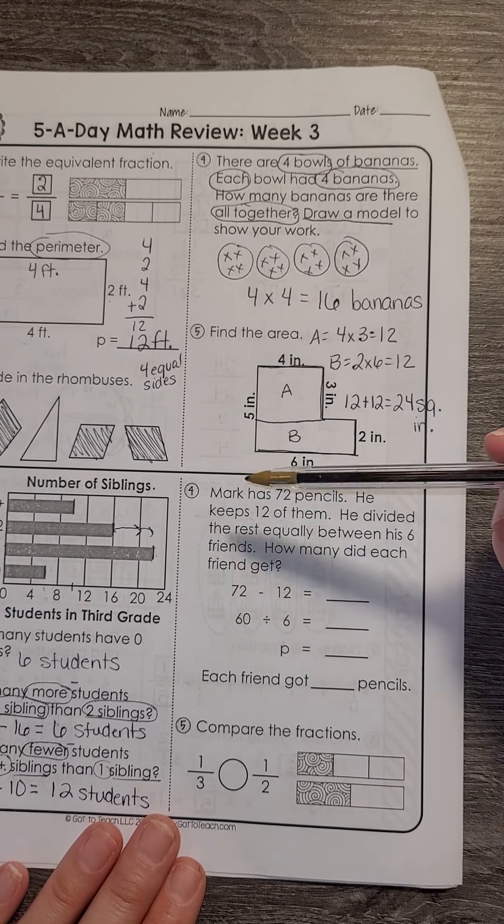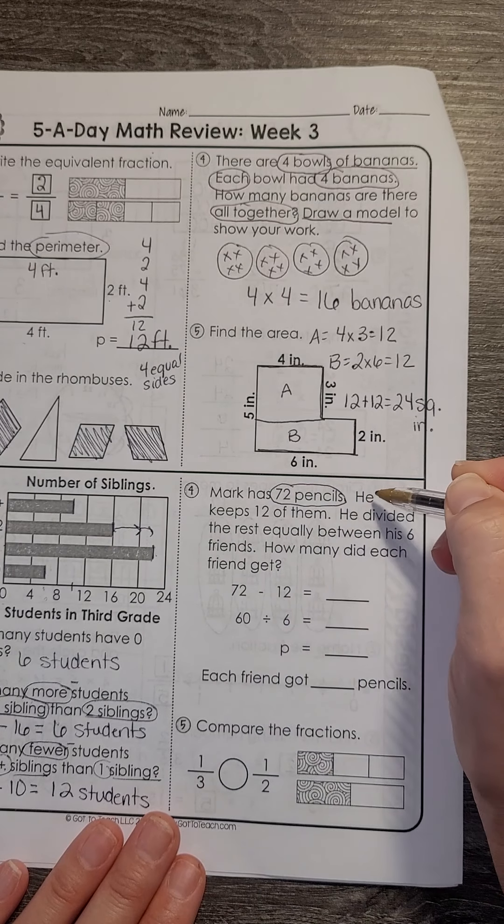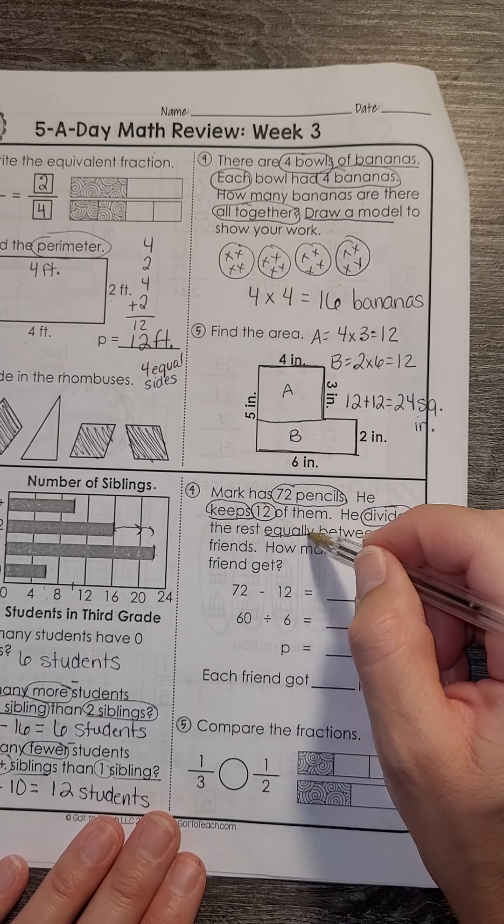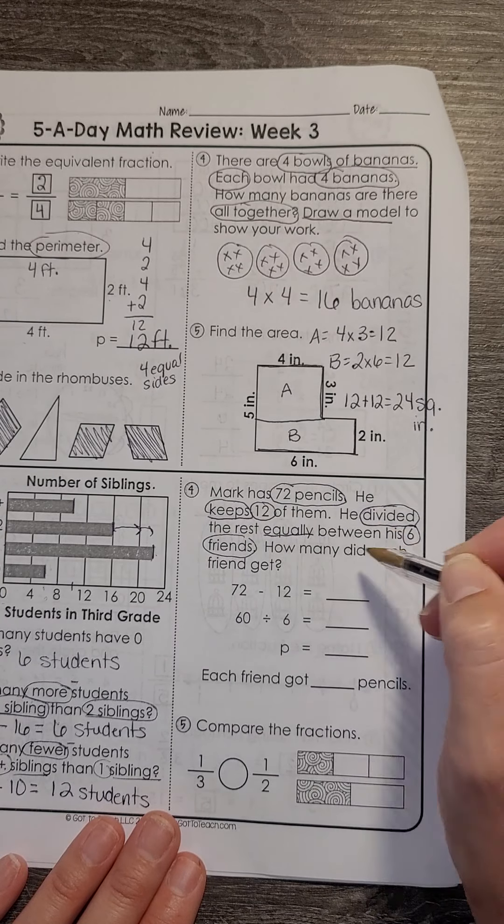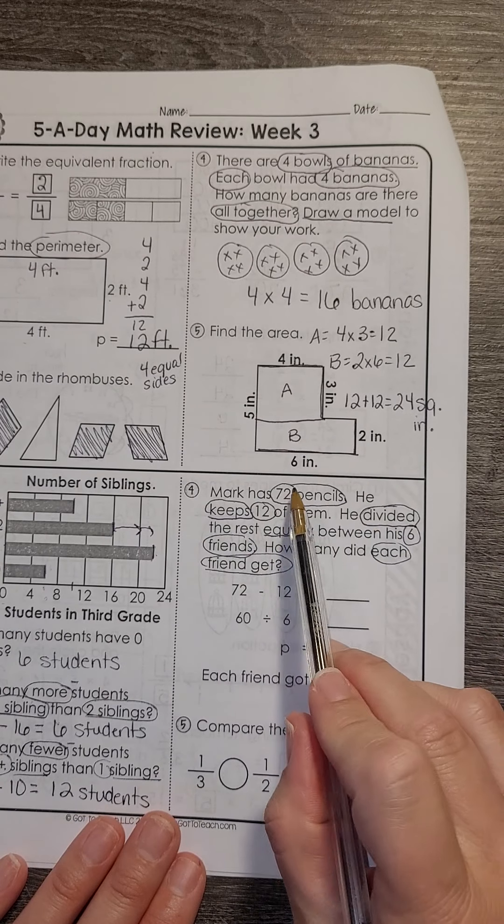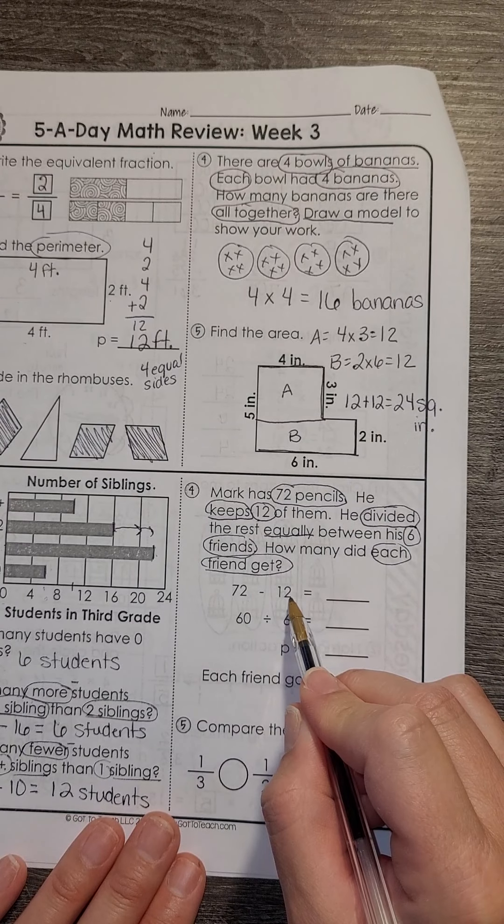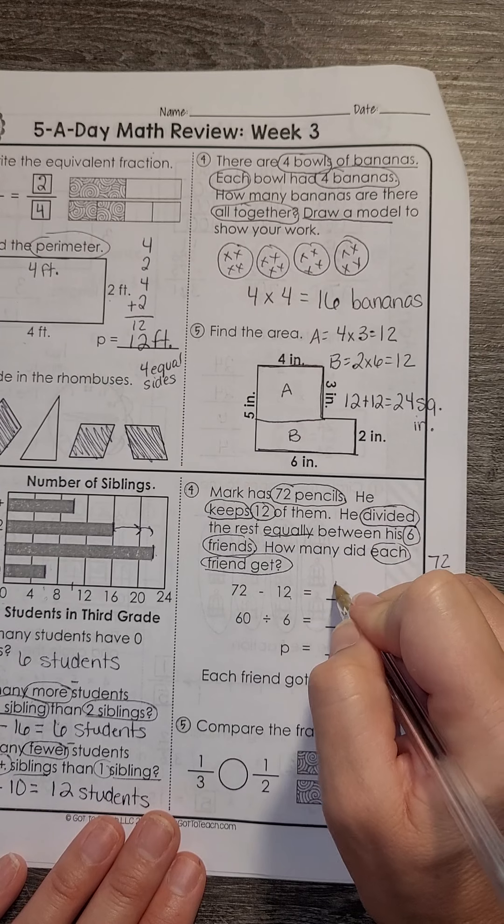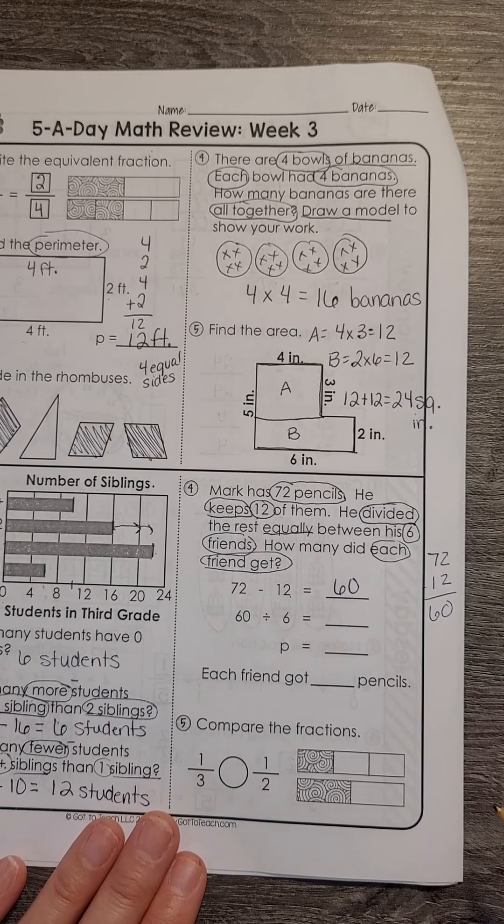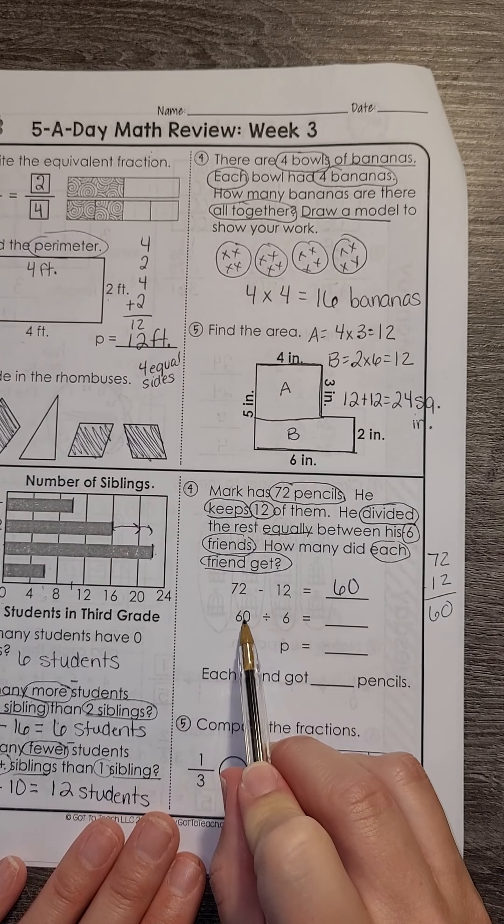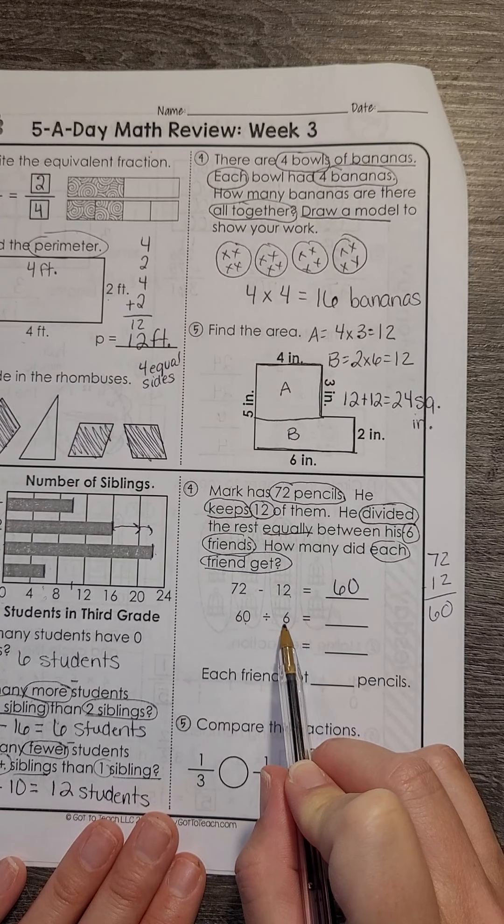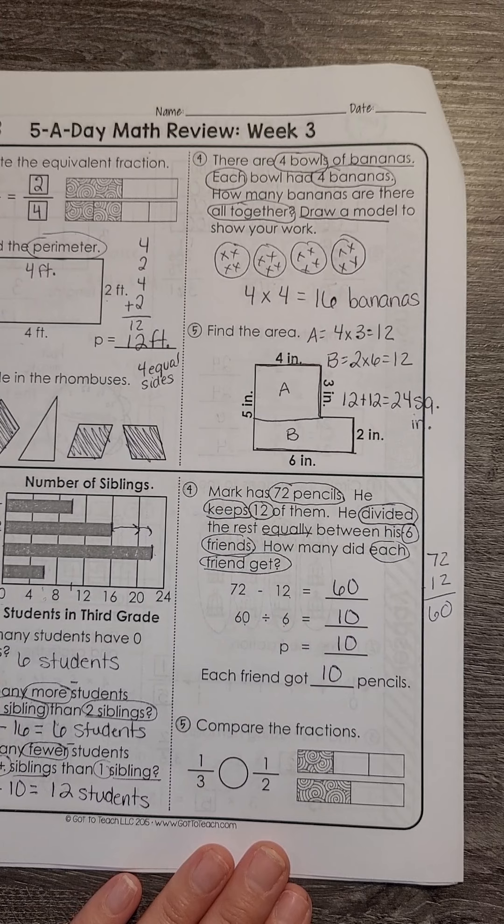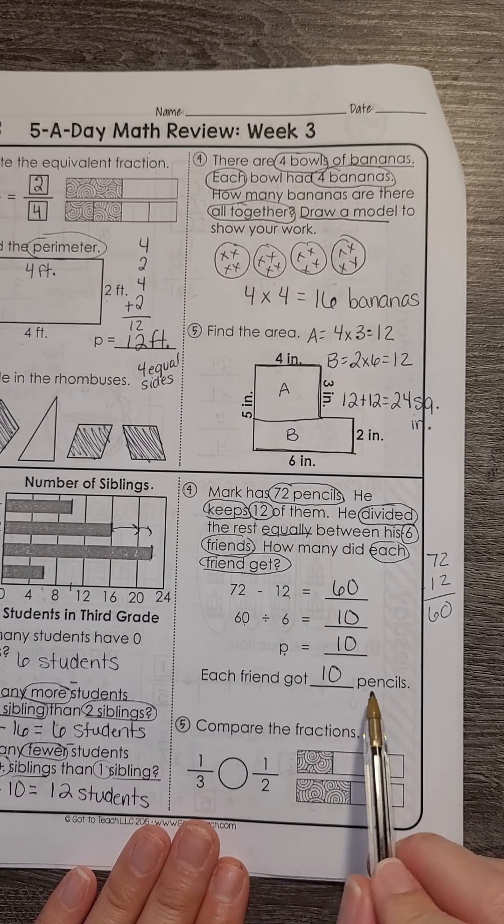Number four on Thursday. Mark has 72 pencils. He keeps 12 of them. He divided the rest equally between six friends. How many did each friend get? So he has 72. If he keeps 12, he's subtracting those. So 72 minus 12. And if you have to rewrite it so that you can subtract properly, that would give us 60 pencils that he's dividing. So then he divides them between six friends. So 60 divided by six. I would count how many groups of six are in 60 and that would be 10. So my answer to how many pencils each friend got is 10. P is standing for pencils. There's my answer. And then I put it in this sentence.